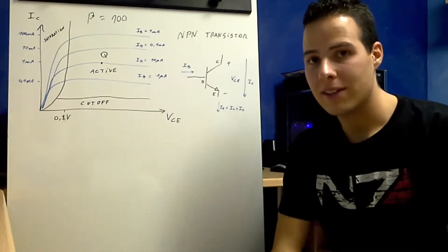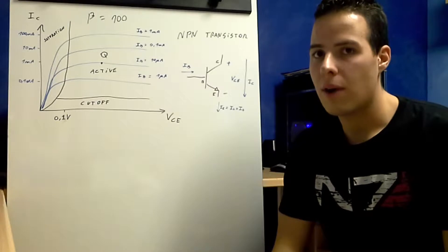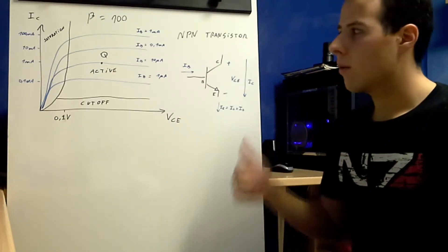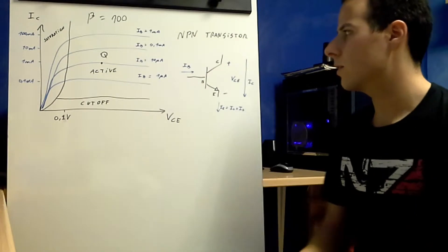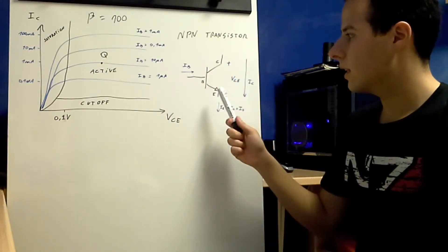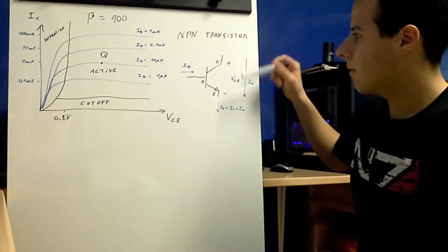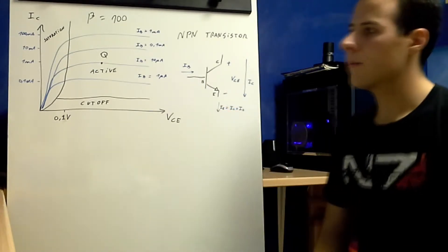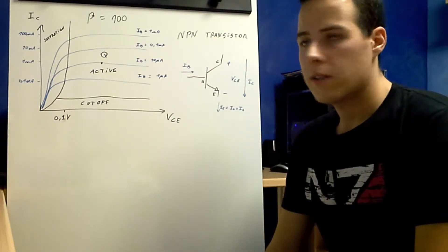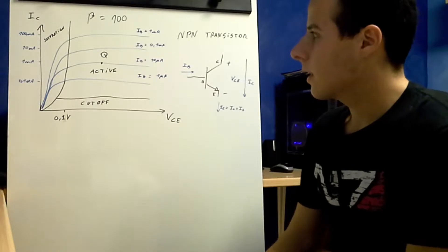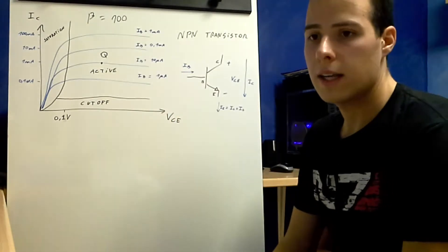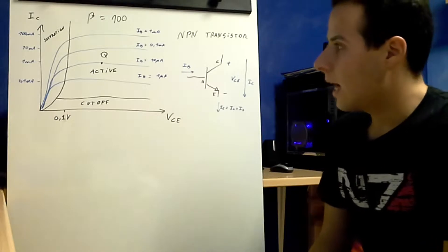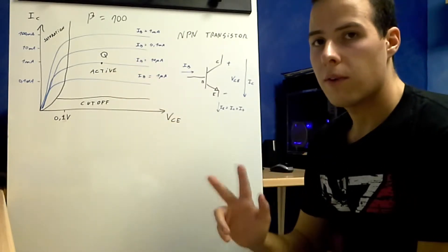So, before I continue to explain to you why you have to bias your amplifier, I wanted to show you the voltage-current relationship. And I just drew an NPN transistor for your reference. So, here's the base, the collector and the emitter. And you have the collector emitter voltage, the collector current and the base current. So, this is the current and voltage relationship for this transistor. And these lines, these blue lines, are different current and voltage relations for different base currents. And as you can see, this chart is divided in three regions.